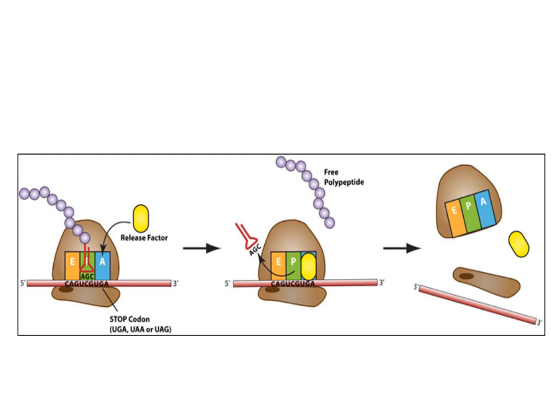Binding of a release protein causes the polypeptide, or protein, to be released from the ribosome. The ribosome subunits dissociate from each other and can be reassembled later for another round of protein synthesis, and the protein produced will fold into its final shape and then be shipped to where it is needed.